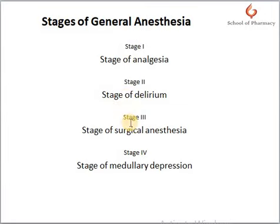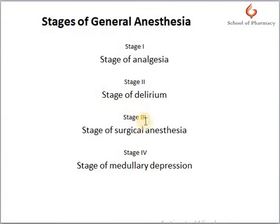The third stage is the stage of surgical anesthesia. In this stage, excitement is lost — in the delirium stage the patient could laugh or vomit — but here in the third stage, excitement is lost, skeletal muscles get relaxed, and most types of surgeries are done in this stage. When a patient reaches this stage of surgical anesthesia, the surgery is started.